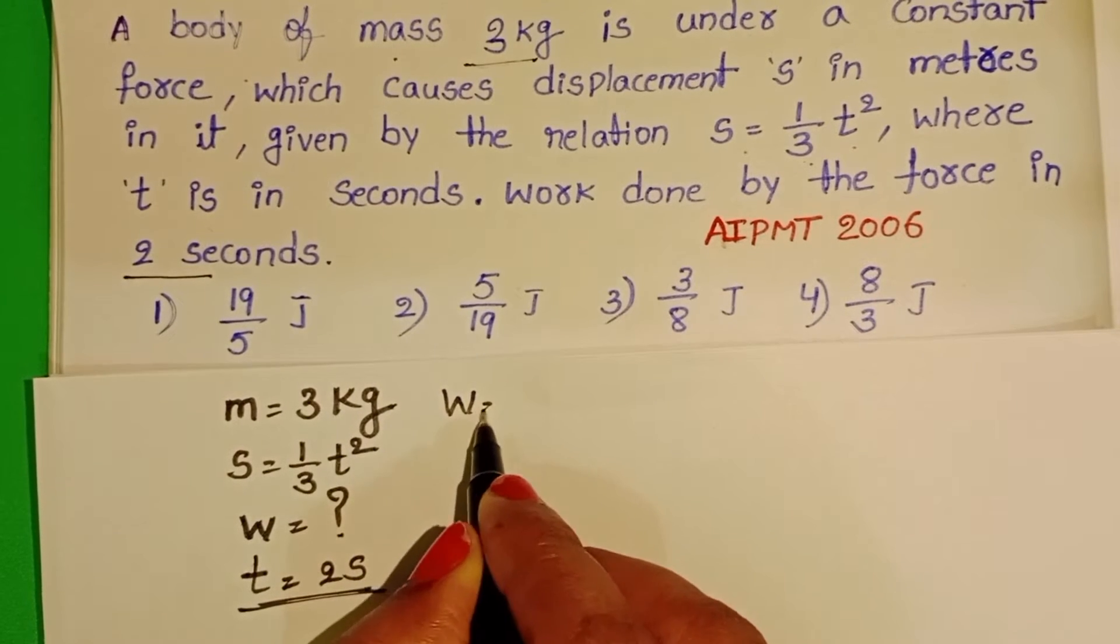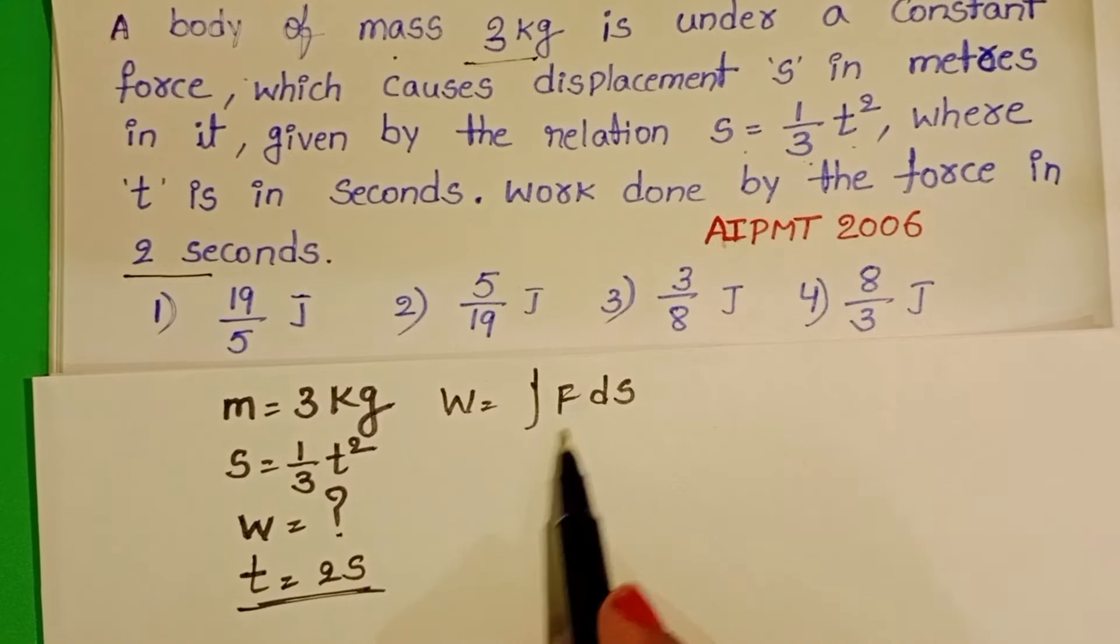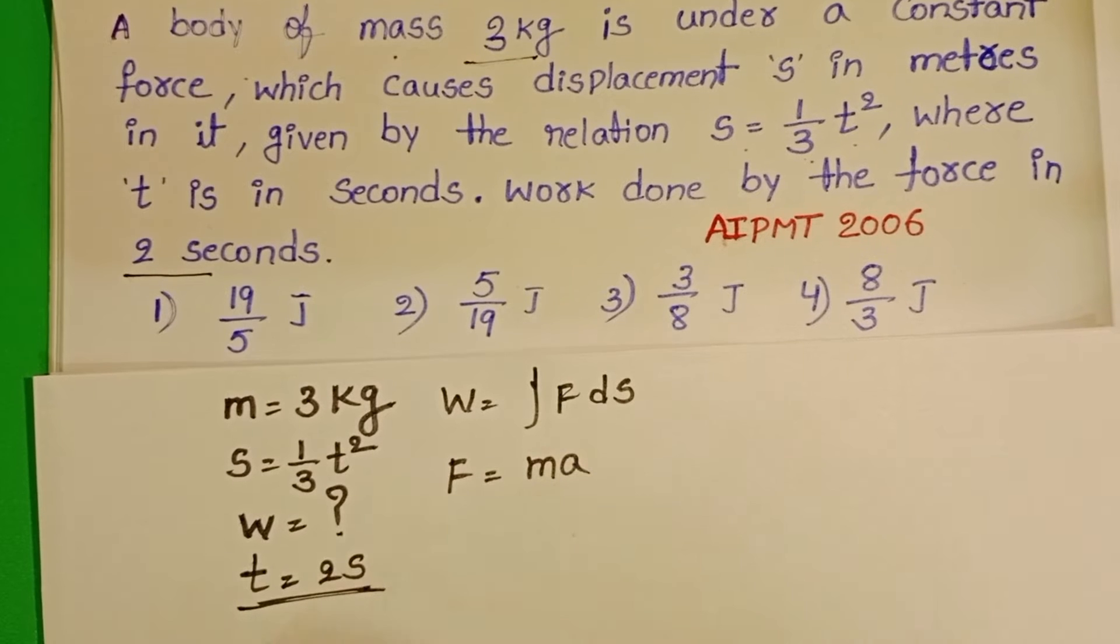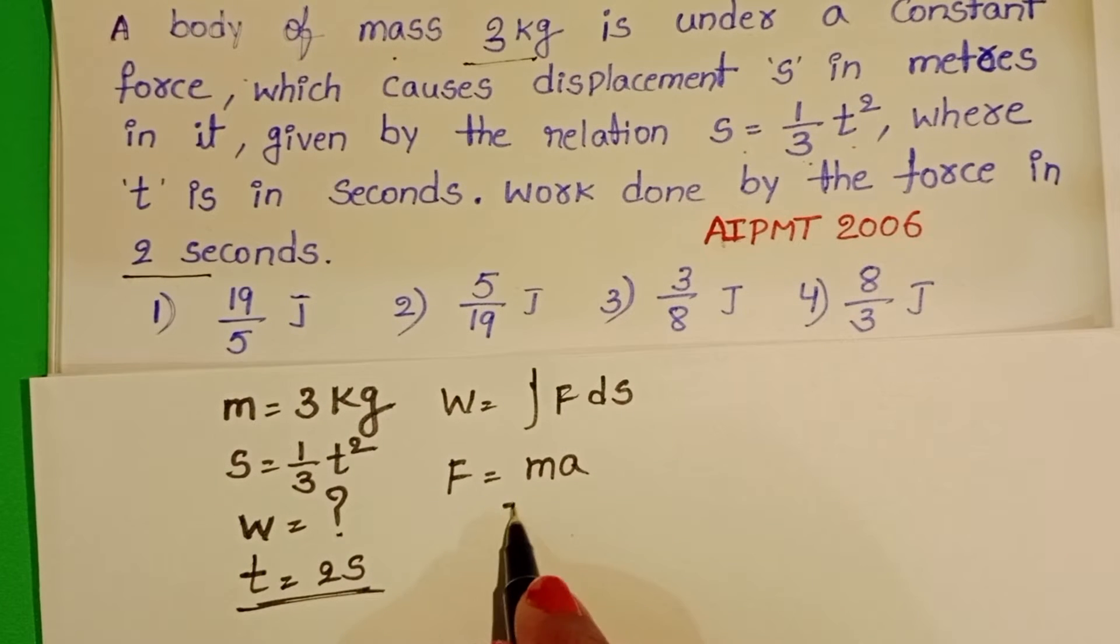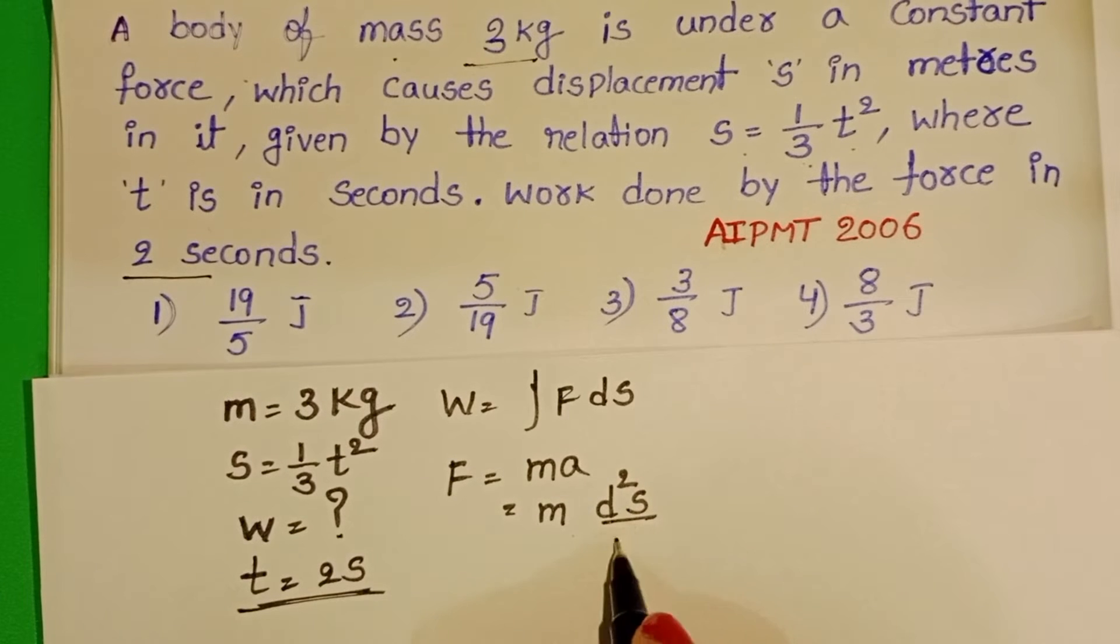Take the formula: work done equals integral F dS. First, find out the force. We know F equals mass into acceleration. In place of acceleration, take d square S by dt square.